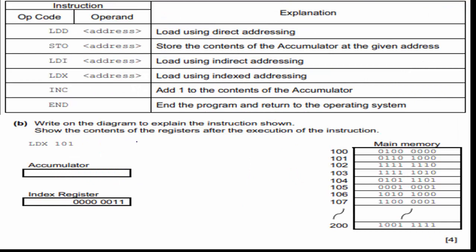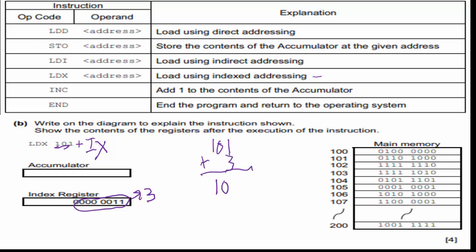LDX can throw students for a loop because it says load using indexed addressing. It's the address plus what we call the index register. The index register value is shown here. What is the denary value of this binary number? It is three. So I'm going to use address 101 — the address they gave us — but I need to add the index register, which is three. That means they want me to use address 104.